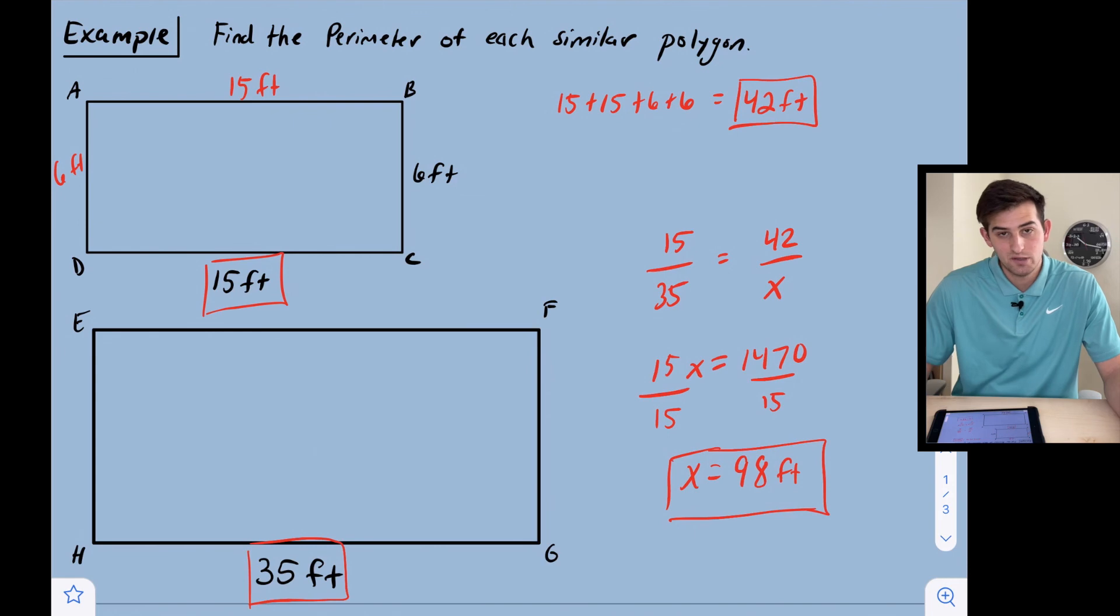We get 98 for the perimeter of the larger shape. So now we have the perimeter of the small shape, 42 feet, and the perimeter of the large shape, 98 feet. That's how the perimeters of similar polygons are related.